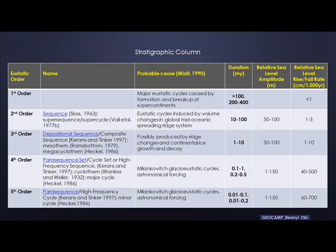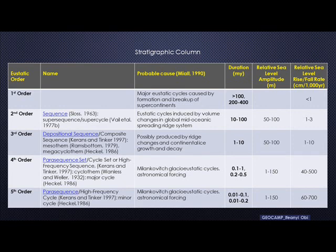If you look at the third column, we've highlighted what we call the probable cause. For each order, we look at what has caused this change. At the first order, you're looking at global sea level changes triggered by the breakup or formation of supercontinents. At the second order, similar, but involving changes in spreading of mid-oceanic ridges and related large-scale tectonic activities. The third order is similar. And then the fourth and fifth orders have one thing in common: Milankovitch glacioeustatic cycles.